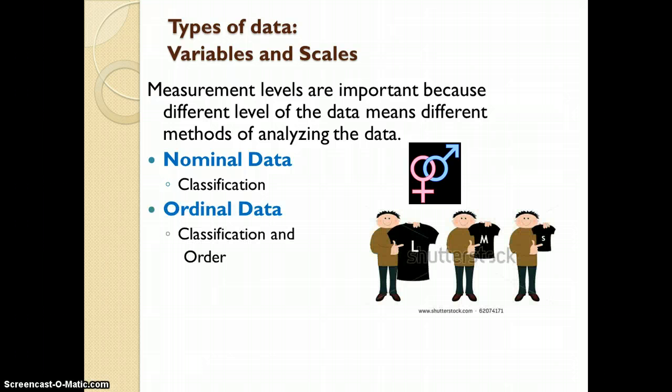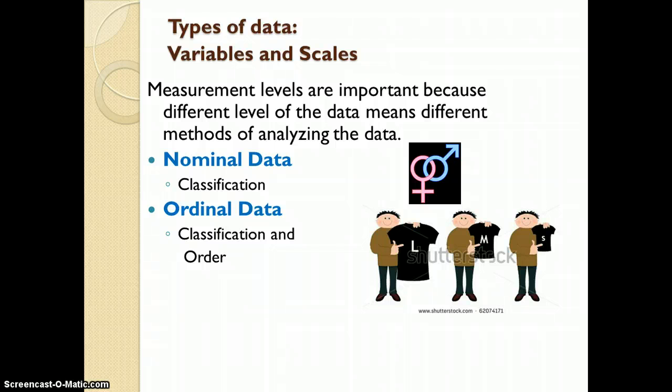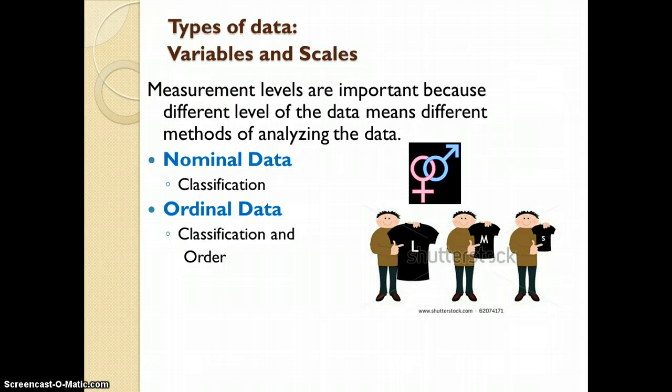The next measurement level is called the ordinal level. If a variable is measured on the ordinal level, we can both categorize them and also order the classes. For example, size in clothes.